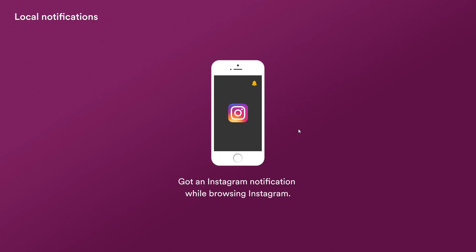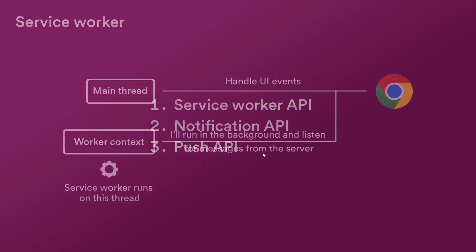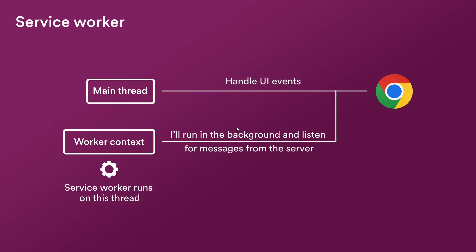Now the required APIs and components for this to work will be the Service Worker API, the Notification API, and the Push API. The reason why we'll need a service worker is that we do not want our main thread to be listening for any new events from the backend. We want a different thread running in the background that's going to notify the clients when something happens, so the service worker will help us with that.